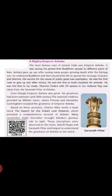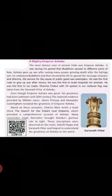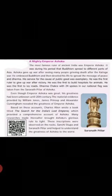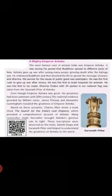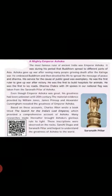His service for the cause of public good was exemplary. He was the first ruler to give up war after victory and the first to build hospitals for animals. He was the first to lay roads. The Ashoka Chakra with 24 spokes in our national flag was taken from the Sarnath Pillar of Ashoka. Even though Emperor Ashoka was great, his greatness had been unknown until the 19th century. The material evidence was provided by William Jones, James Princep, and Alexander Cunningham, who revealed his greatness.